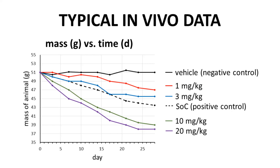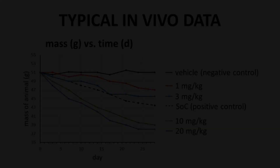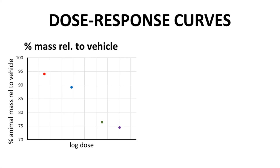While this type of data is very informative, let's isolate these final data points — just the day 28 points for the four dosing groups — and visualize them differently. From these four data points, we can generate a dose-response curve. On the x-axis is the log of the dose, and the y-axis is percent mass of the animal relative to the vehicle group. These four points generate a curve — a dose-response curve — that has a sigmoidal shape, as long as the dose range of the test groups gives a representative range of responses. The lower dose gives less change in mass than the higher dose.